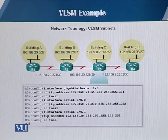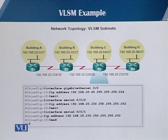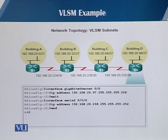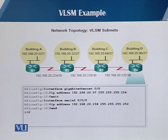Router R3 is configured the same way as R2. The LAN segment interface is given .65, the serial interface connected to R2 is given .230, and the other serial interface connected to R4 is given .233, because that subnet has address .232 and .233 is the first host address. Router R4's LAN segment interface is given .97, and its serial interface is given .234, because .233 was already assigned to one of R3's interfaces belonging to the same .232 subnet.